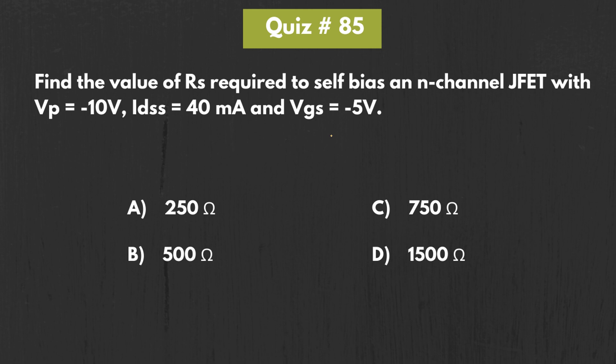In this second question, this n-channel JFET is biased in the self-biased configuration, and it is assumed that the JFET operates in the saturation region. We have been asked to find the required value of Rs such that Vgs is equal to -5V.